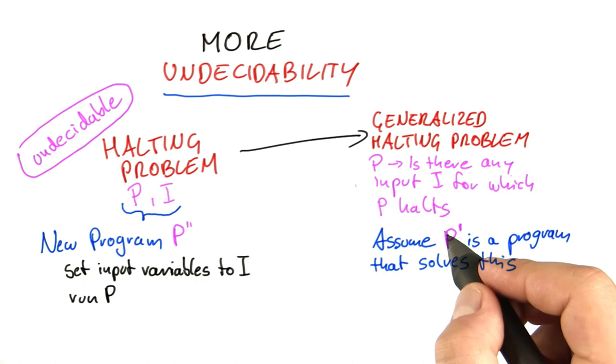This program here cannot exist because if the generalized halting problem were decidable, this would also mean that the special halting problem here where we are given an explicit input would also be decidable. So we know that this problem is now undecidable as well.